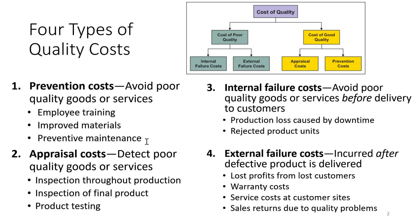The second type of quality costs are appraisal costs — costs incurred to detect poor quality goods or services. Examples of appraisal costs are the cost of inspection through production, inspection of final products, and product testing.